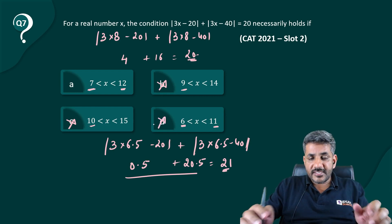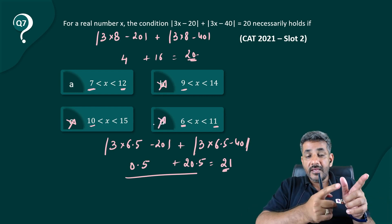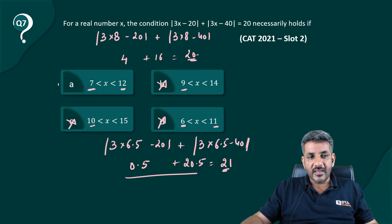That means even 6.5 cannot be in my range. So in D option, I have 6.5 between 6 and 11. A does not have 6.5 and therefore, A becomes the answer for us.